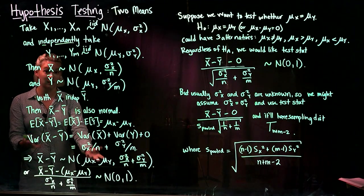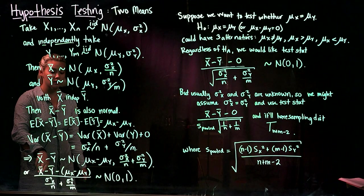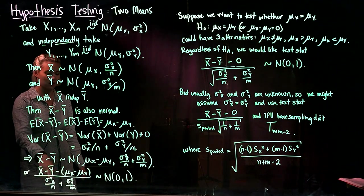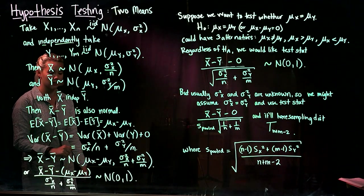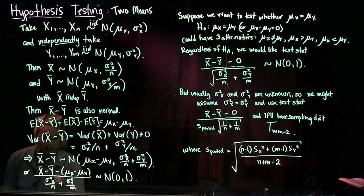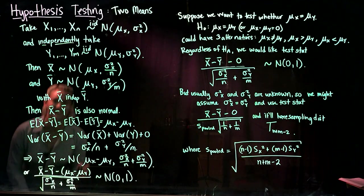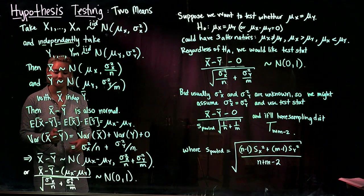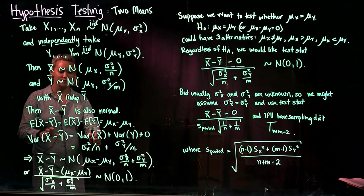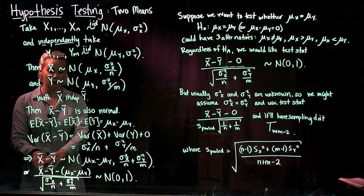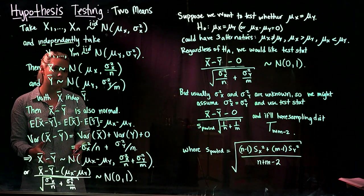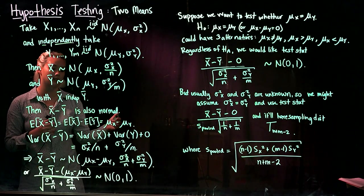If we wanted to standardize this, we take x̄ minus ȳ, subtract its mean, and divide by the square root of its variance. That gives us the standard normal distribution. So we have a sampling distribution for x̄ minus ȳ, which will be useful when we do our hypothesis testing.